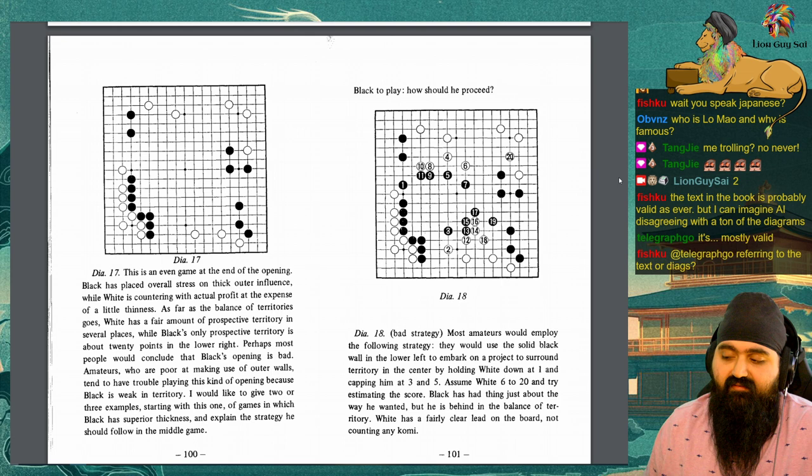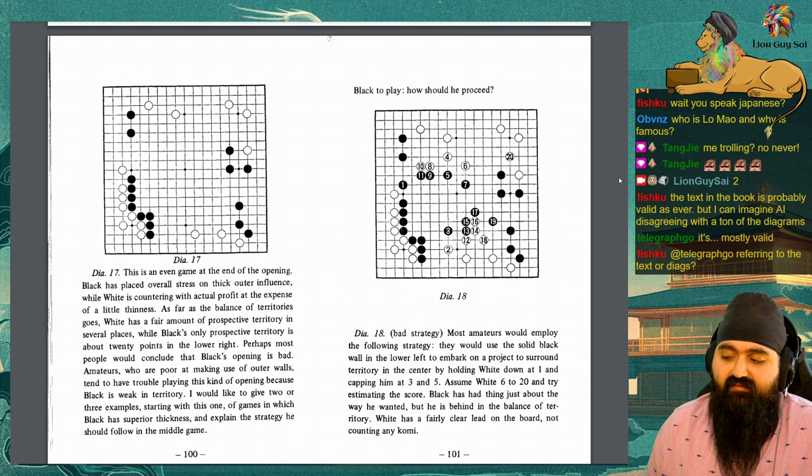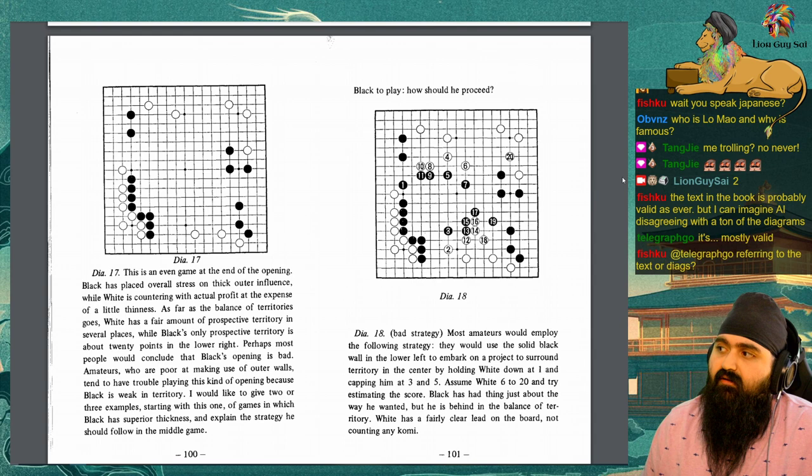I would like to give 2 or 3 examples, starting with this one, of games in which black has superior thickness and explain the strategy he should follow in the middle game. Black to play. How should he proceed?